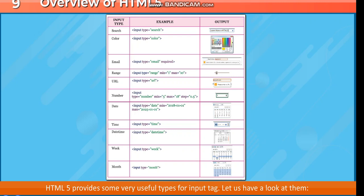Further input types include: Number — input type equal to number, minimum 5, maximum 18, step equal to 0.5; Date — input type equal to date, min equal to 2018-01-01, max equal to 2025-01-01; Time — input type equal to time; DateTime — input type equal to datetime; Week — input type equal to week; and Month — input type equal to month.